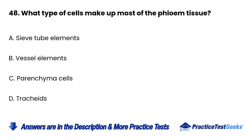Question 48: What type of cells make up most of the phloem tissue? a. Sieve tube elements. b. Vessel elements. c. Parenchyma cells. d. Tracheids.